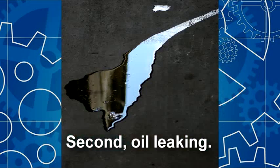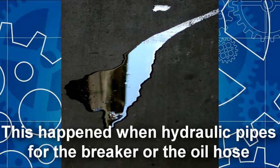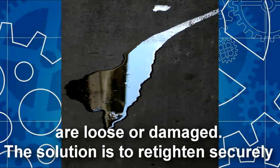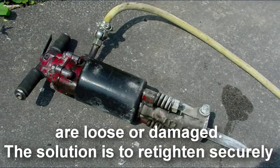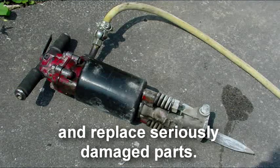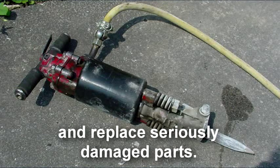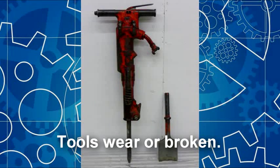Second, oil leaking. This happens when hydraulic pipes for the breaker or the oil hose are loose or damaged. The solution is to retighten securely and replace seriously damaged parts.